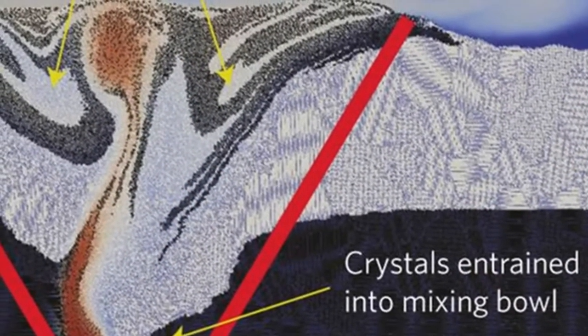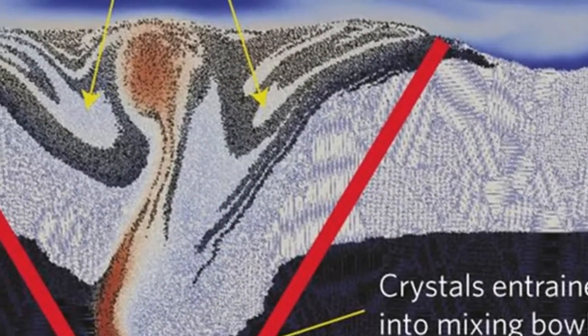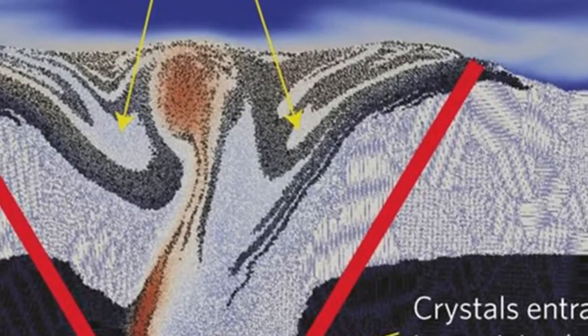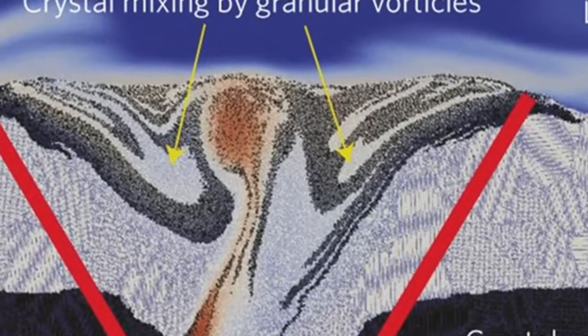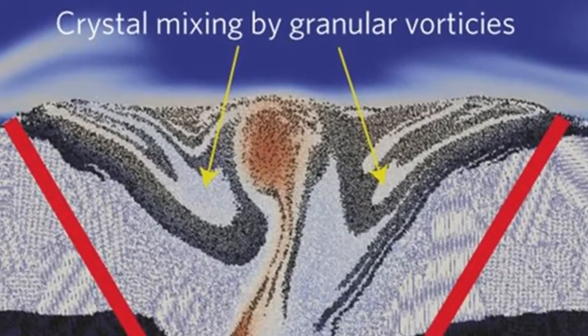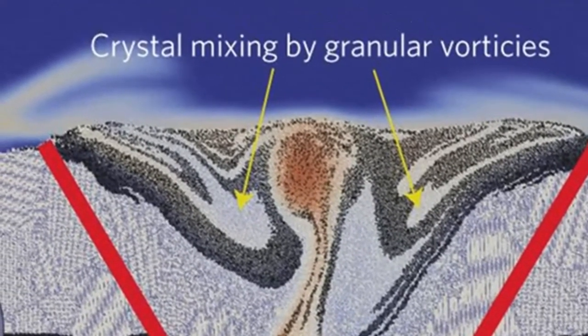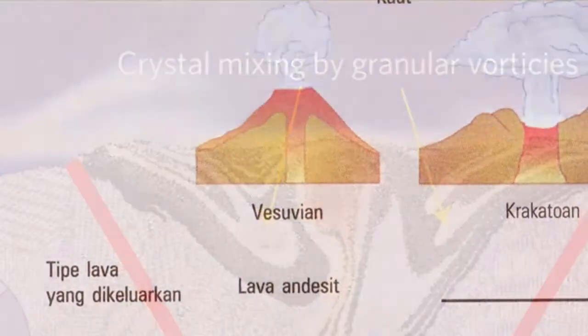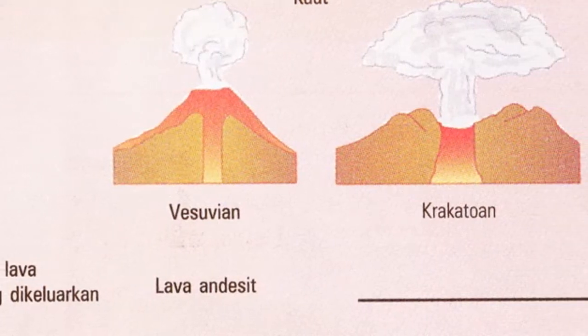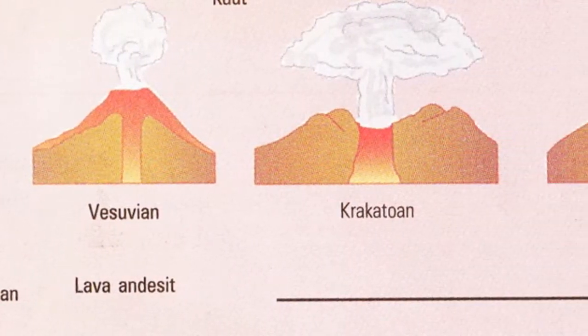As the temperature rises, the ions vibrate more rapidly and consequently collide with ever-increasing vigor with their neighbors. Thus, heating causes the ions to occupy more space, which in turn causes the solid to expand.